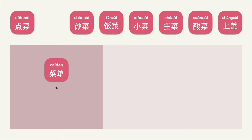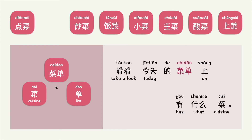菜单 is a noun. 菜 is cuisine, 单 means list. Put into context, you can say: 看看今天的菜单上有什么菜。 — Cuisine list. What do you think 菜单 means? 菜单 refers to a menu.